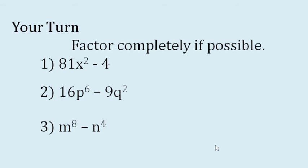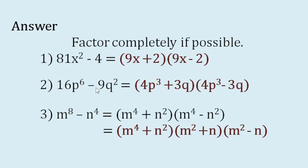I prepared here three items for you to factor. It says here: factor completely if possible. You can pause the video and take time. If you are done, I can now show you the answer. For item number one, the factors are the quantity 9x plus 2 times the quantity 9x minus 2. For item number two, the factors are the quantity 4p cubed plus 3q times the quantity 4p cubed minus 3q. And for item number three, the factors are the quantity m to the power of 4 plus n squared times m squared plus n times the quantity m squared minus n.